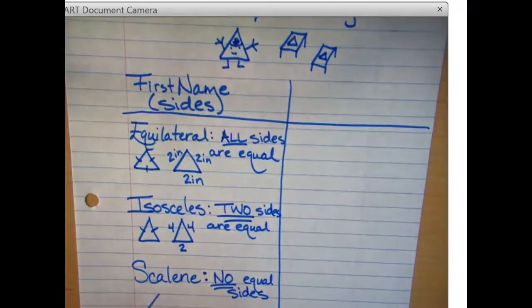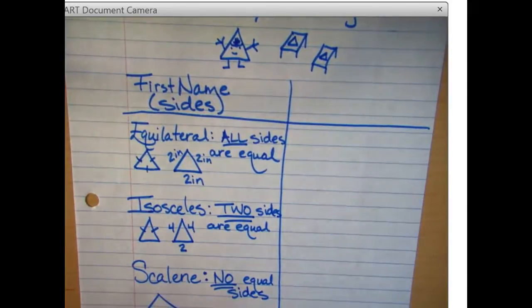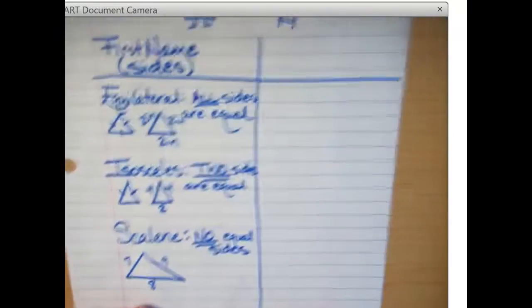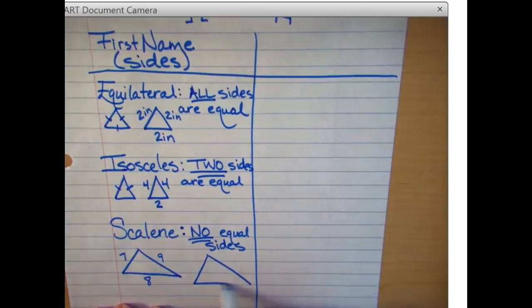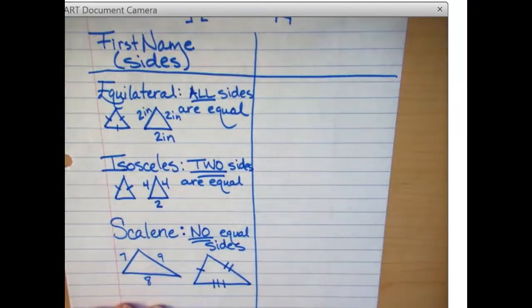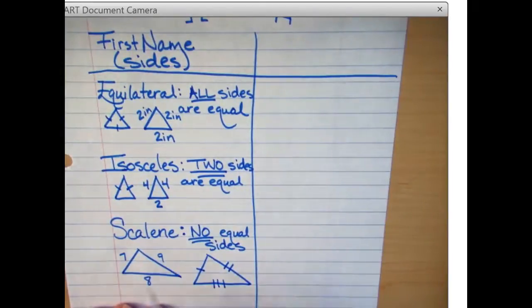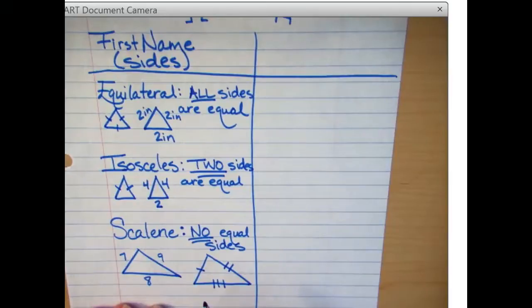I always, when I see Scalene, I think of like some evil Harry Potter character. He's all wonky. This side might be nine. This side might be seven. This side might be eight. They're going to give you a triangle that either has three different lengths, or sometimes you'll see it where they do one hash, two hashes, and three hashes. So this is how we determine the first name of our triangles when we name them.